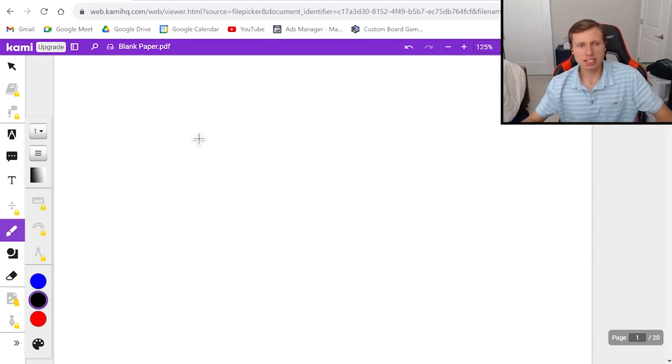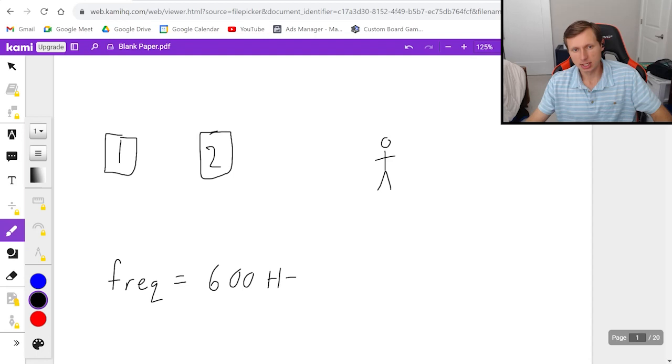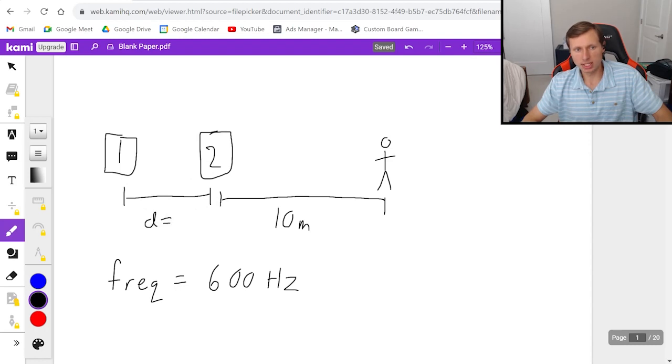So first, let's say we have two speakers, speaker 1, speaker 2 here, and let's say we the listener are standing somewhere over here. Now I'm going to say both speakers are outputting at a frequency of 600 Hertz. So all these speakers are in a line, and let's say we are located 10 meters away from speaker 2. My question is, how do we need to position speaker 1 and 2, in other words, what's the distance between these two speakers, in order to have constructive interference.